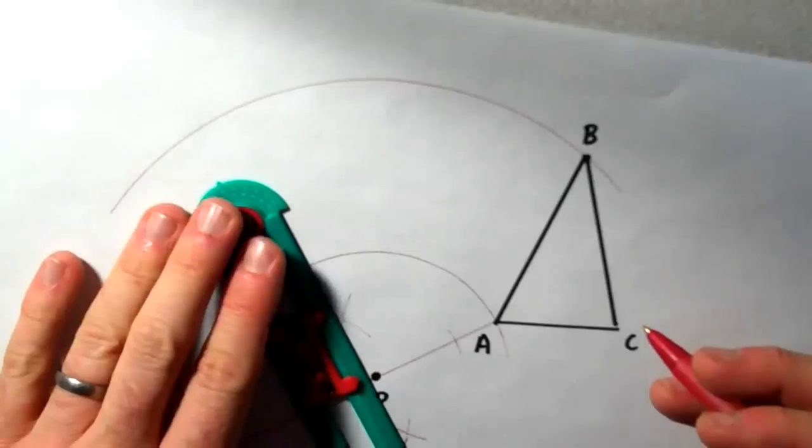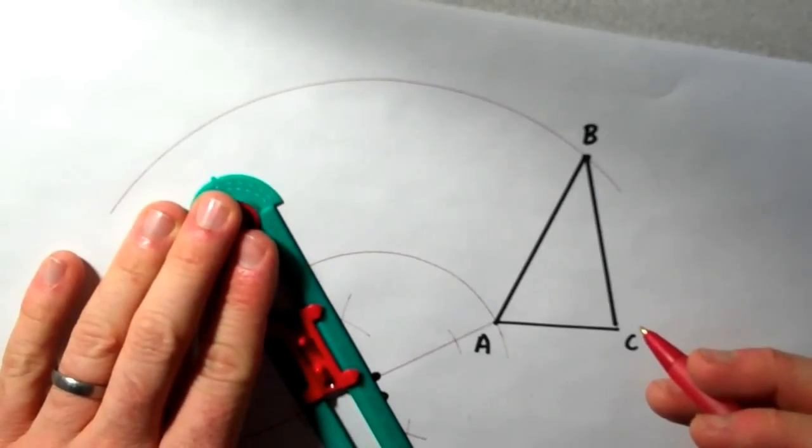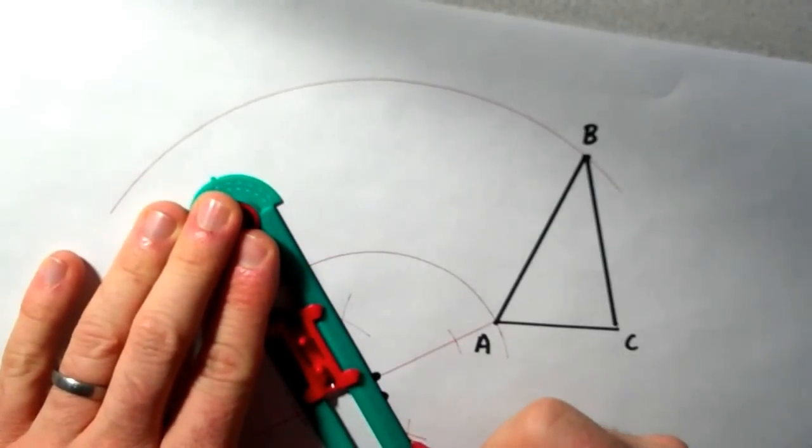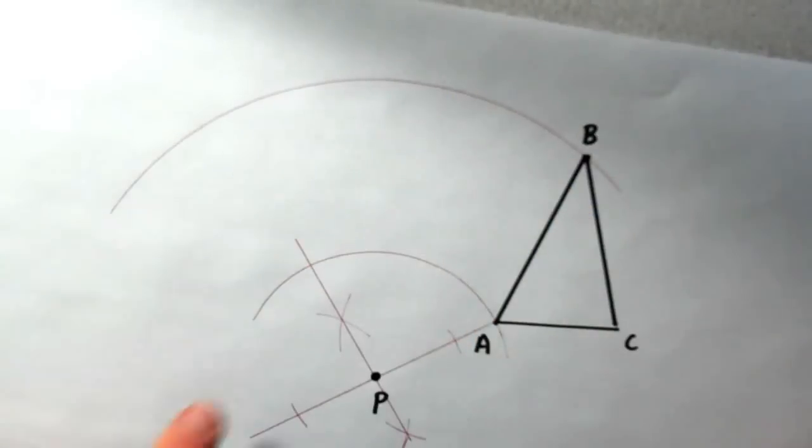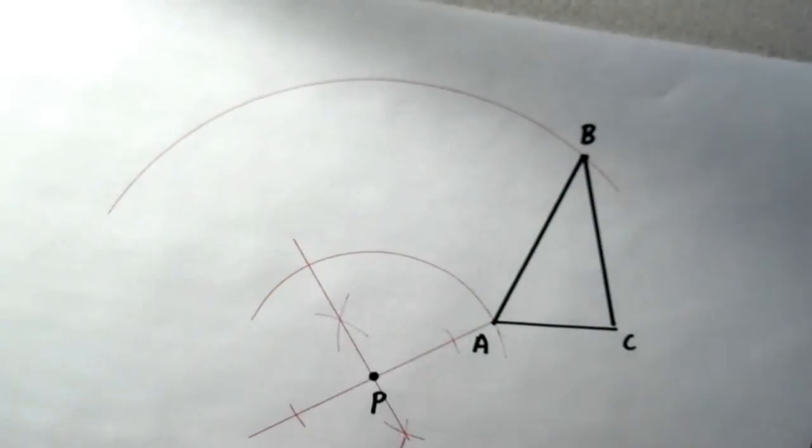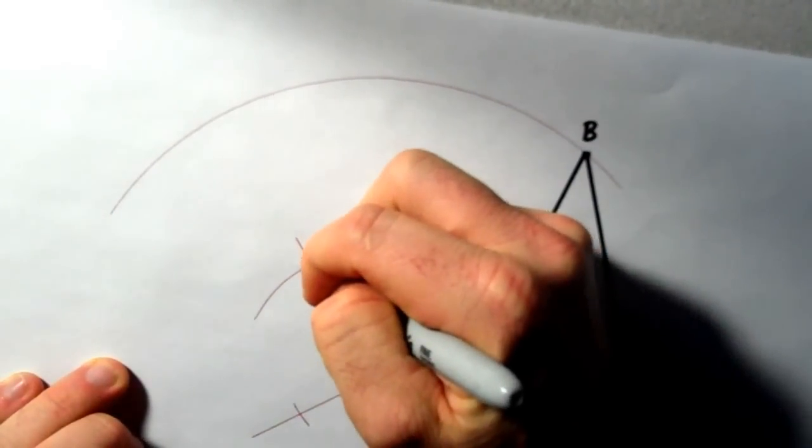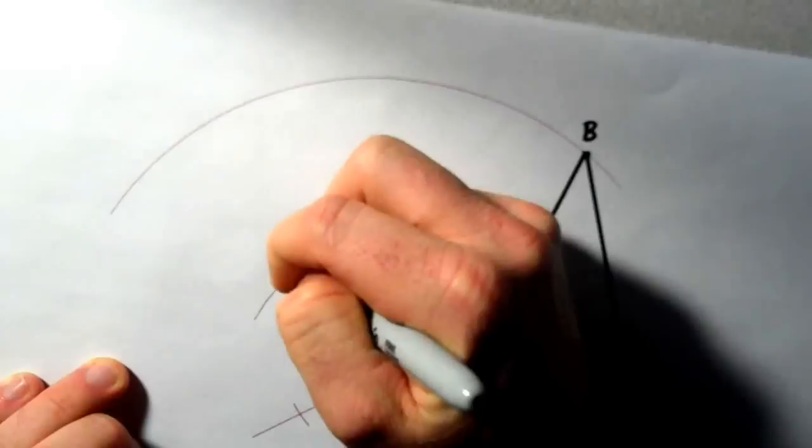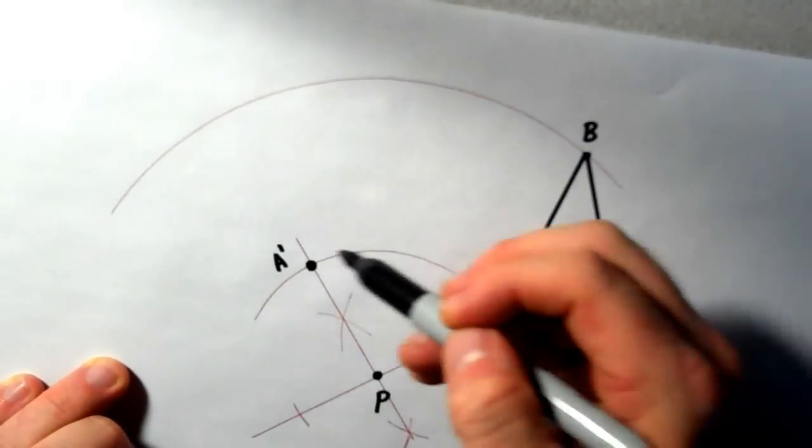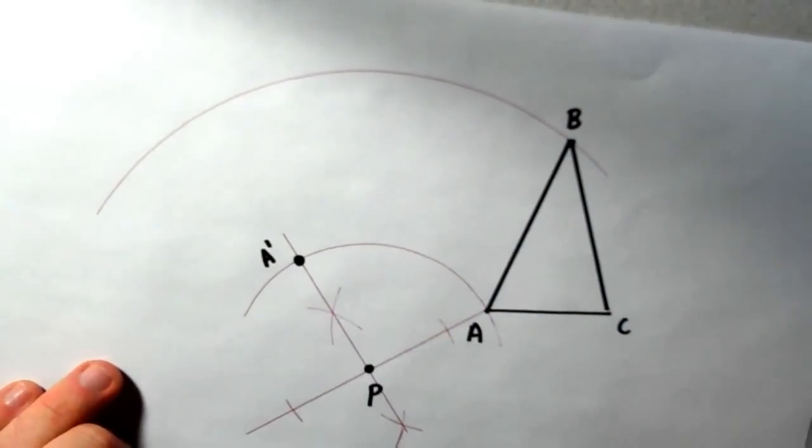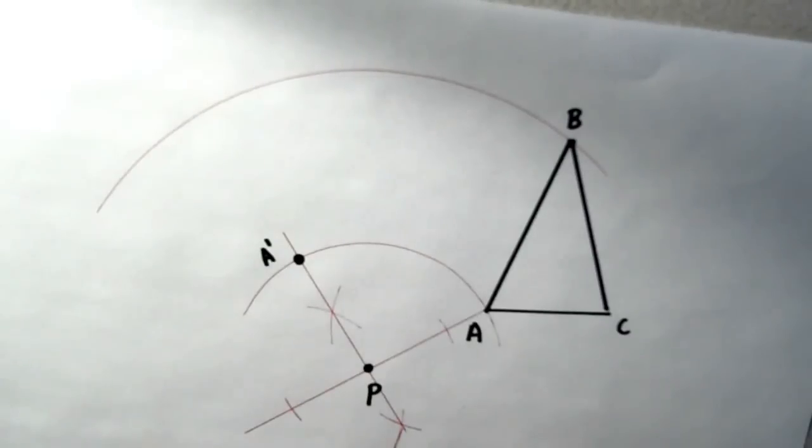And I need to do a little bit more work on that bottom arc. There we go. And now if I connect that line, right here where they intersect, that's going to be A prime. So that's where the perpendicular line and the arc, the path of rotation intersect. That's going to be my A prime.